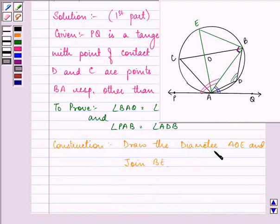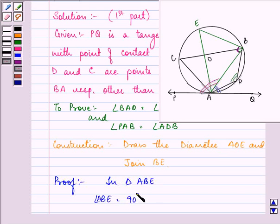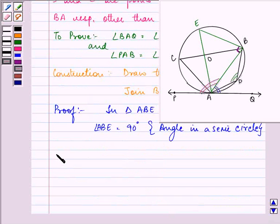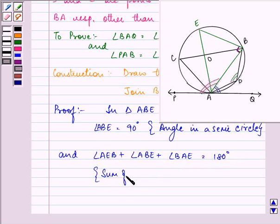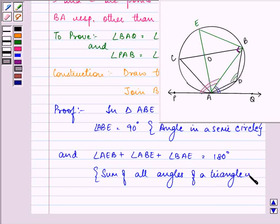For that, we need to draw the diameter AOE and join BE. Now let's proceed with the proof. In triangle ABE, we know that angle ABE is equal to 90 degrees because it is an angle in a semicircle as we have by construction drawn AOE as diameter. Now further, angle AEB plus angle ABE plus angle BAE is equal to 180 degrees because the sum of all angles of a triangle is 180 degrees.